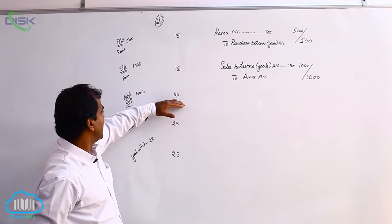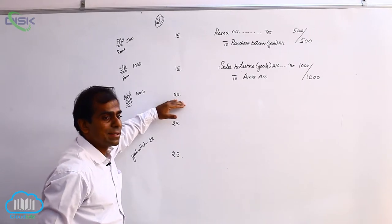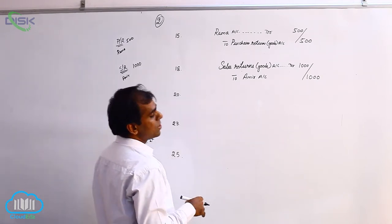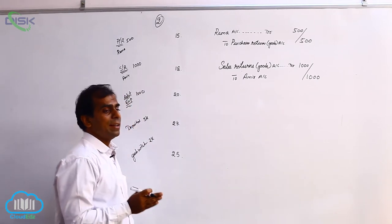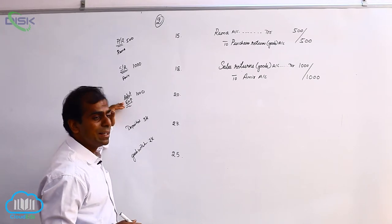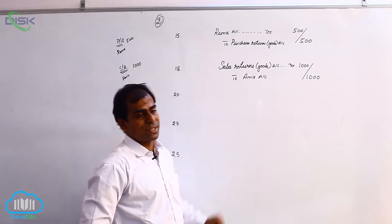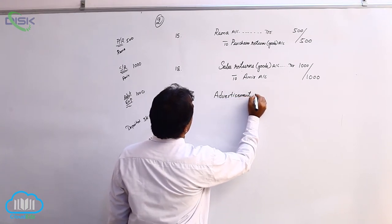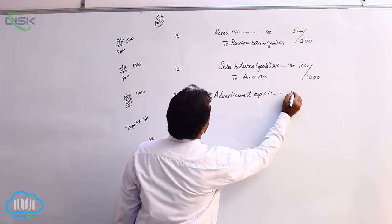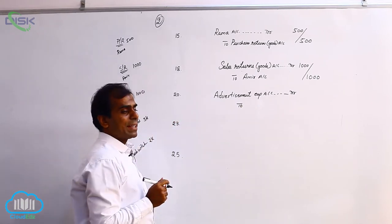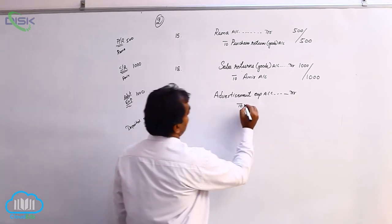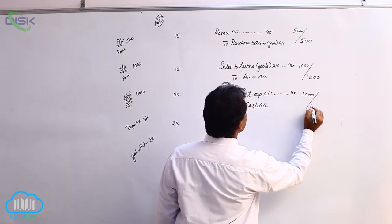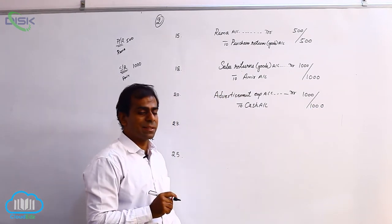The next transaction on 20th is advertisement expenses paid. All expenses fall under nominal account, so we classify advertisement expenses as a nominal account. The rule for expenses is: debit all expenses and losses. So we debit advertisement expenses account. Since we would have paid cash, and cash is a real account going out, we credit cash. The amount being 1000. Narration: being advertisement expenses paid.